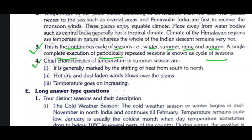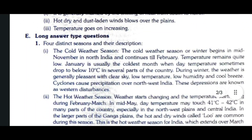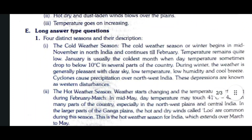Question number four: What are the chief characteristics of temperature in summer? The chief characteristics of temperature in the summer season are: first, it is generally marked by the shifting of heat from the south to the north; second, hot, dry and dust-laden winds blow over the plains, and temperature keeps increasing.